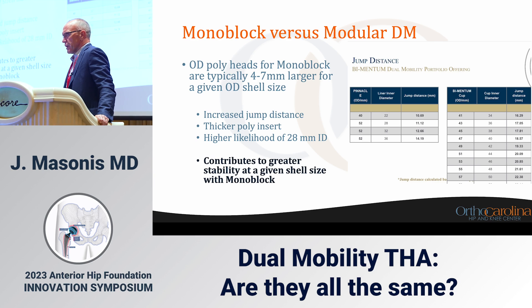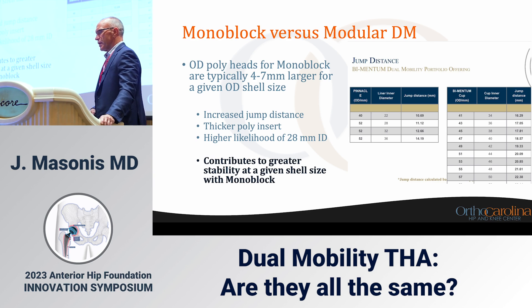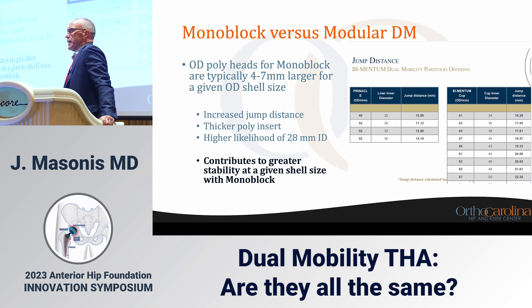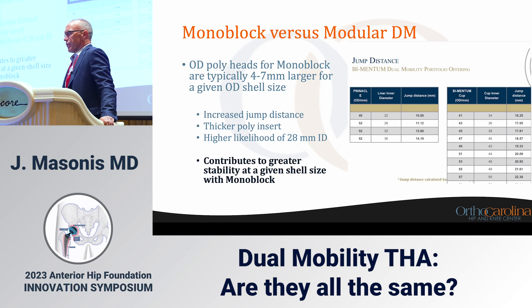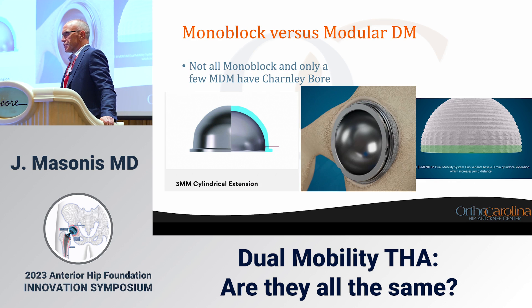For monoblock versus modular dual mobility: the outer diameter poly heads for monoblocks are typically four to seven millimeters larger for a given outer diameter shell size. This means an increased jump distance and a thicker poly insert, and monoblocks are more likely to reach a 28-millimeter inner diameter head — contributing to greater stability for any given shell size. Some monoblocks and very few modular dual mobilities include the extended cylindrical anatomy of the Charlie boer.